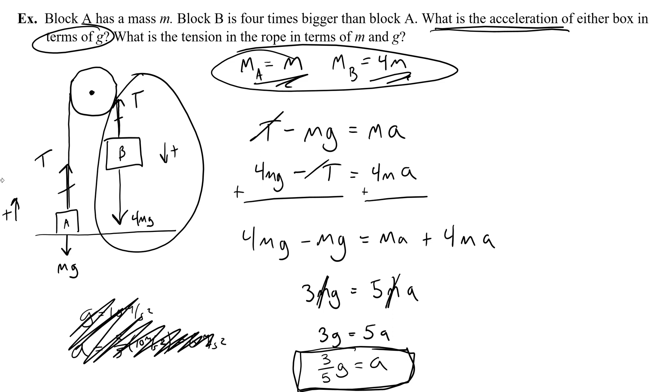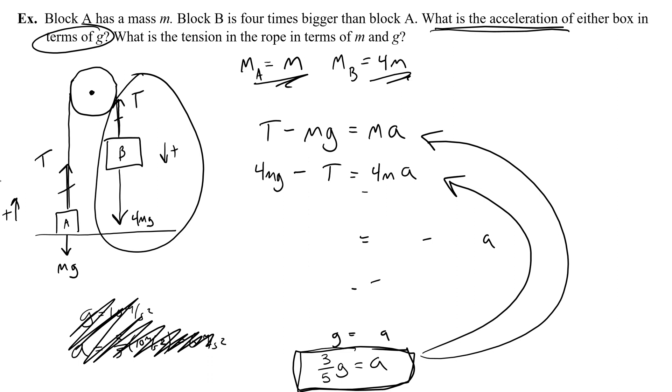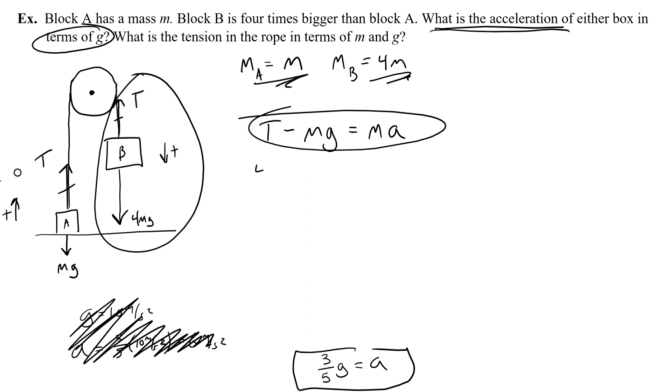So what if I was asked to find the tension in the rope in terms of M and G? Now this is, we don't even have to think too much about this one. What you would do here is you would take this acceleration and plug it back into either of these equations and solve for T. Now, but when you do this, you're going to get M in your final answer. It won't cancel out. So we know the acceleration is three-fifths of G. So I just plug that into an equation and solve for T. I'm going to use this equation.